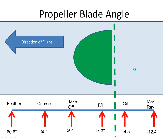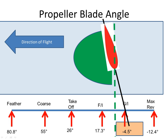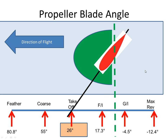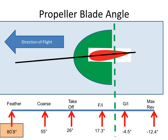Taking a typical propeller on a large turboprop aircraft, we could have values such as max reverse at about minus 12 degrees, ground idle at minus 4.5 degrees at the master station, flight idle at 17.3 degrees, take off at 26 degrees, coarse pitch at 55 degrees, and feather not quite 90 degrees but heading towards 90 degrees.